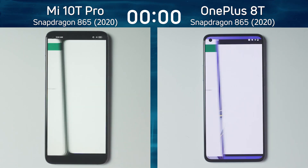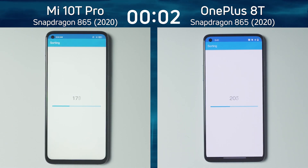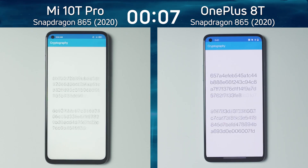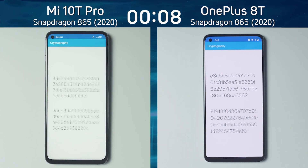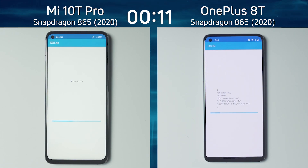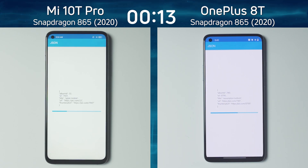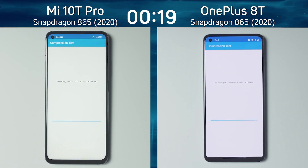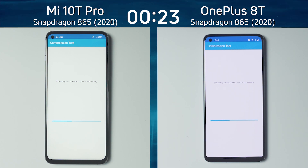We have the Xiaomi Mi 10T Pro on the left-hand side with the Snapdragon 865 running in Full HD, and the OnePlus 8T also with the Snapdragon 865 also running in Full HD on the right-hand side. Of course, these are two very different phones from very different manufacturers. Although they have the same processor, there are so many other differences, including the motherboard, the RAM, the internal storage, the thermals, and so on.